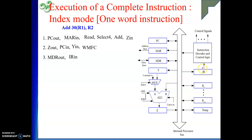Once the instruction is in IR, the decoder is also decoding it. After decoding, we know we need to get one memory operand for our ADD operation. To get the operand from memory, the very first thing required is the address of the operand — the effective address. The effective address is 30 plus content of R1. The 30 is in the address field of the instruction; R1 is in the processor registers.